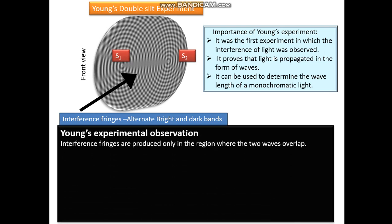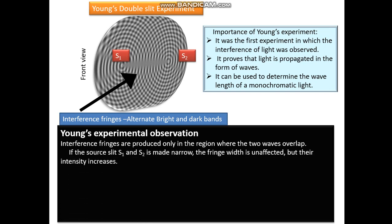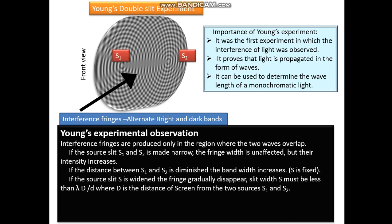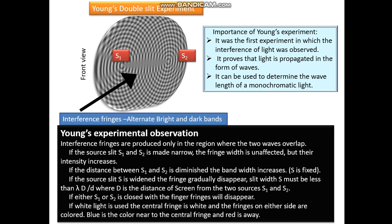Young's experimental observations: interference fringes are produced in the region where the two waves overlap. If the source slits S1 and S2 are made narrow, the fringe width is unaffected but their intensity increases. If the distance between S1 and S2 is diminished, the bandwidth increases. If the source slit S is widened, the fringes gradually disappear; the slit width of S must be less than lambda times D divided by d, where D is the distance of the screen from S1 and S2. If either S1 or S2 is closed, fringes disappear. If white light is used, the central fringe is white and fringes on either side are coloured — blue near the centre, red further away.